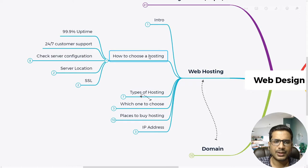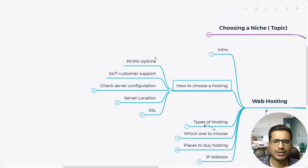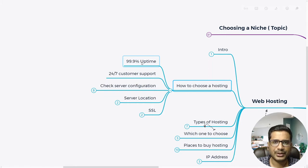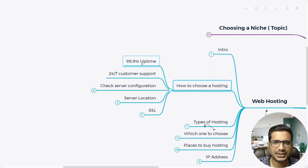When choosing a web hosting, make sure it has 99.9% uptime. Why is this important? Imagine Amazon — every single minute they make lakhs or crores of rupees. If the website is down for one hour or even one day, you can imagine the amount of losses they would incur.